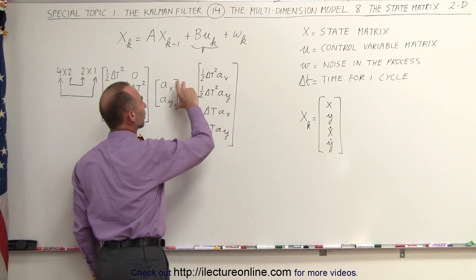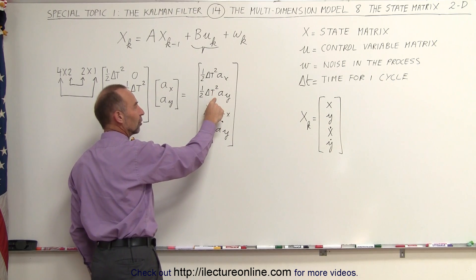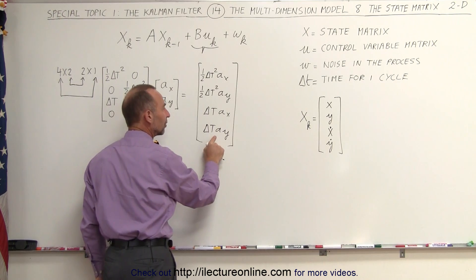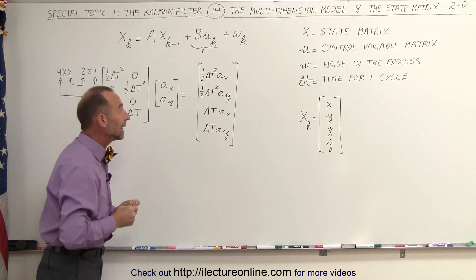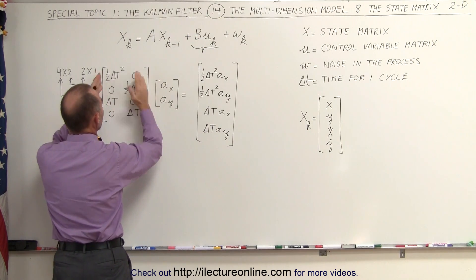So here we have the adjustment because of the acceleration to the position in the x direction, the adjustment to the position in the y direction, the adjustment to the velocity in the x direction, and the adjustment to the velocity in the y direction. This is how we get the adjustment to the state matrix using the correct B matrix right here.